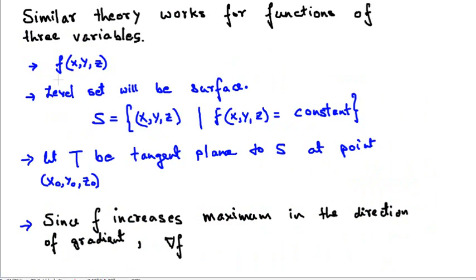Similar theory works for functions of three variables. For example, let f be a function of three variables x, y, and z. In the three-variable case, level sets no longer remain a curve — they generally look like surfaces. The level surface of the function f can be defined as all the points (x, y, z) such that the function equals some particular constant.